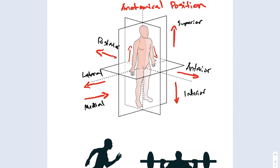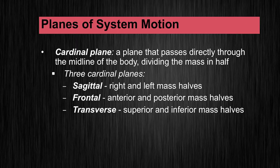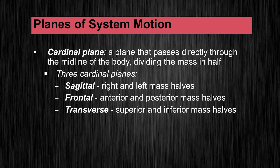Now that we have some directions — superior, inferior, proximal, distal, etc. — we need to talk about planes of motion. A plane of motion is a plane through which movement occurs, and it's one way that we use to describe motion. A cardinal plane is a plane that passes directly through the midline of the body and divides the mass of the body in half. We have three cardinal planes: sagittal divides it into right and left halves; a frontal plane divides the body into anterior and posterior halves; and transverse divides it into superior and inferior mass halves.